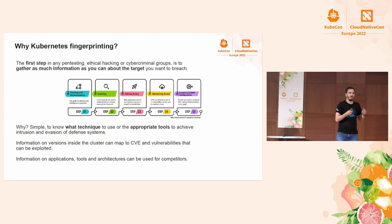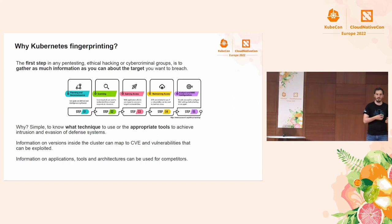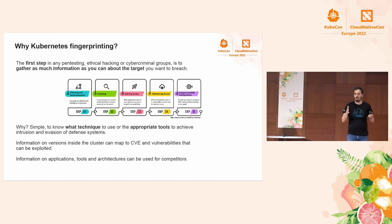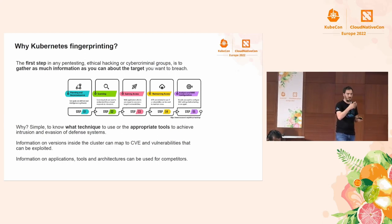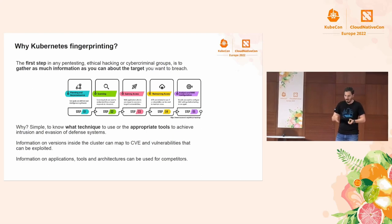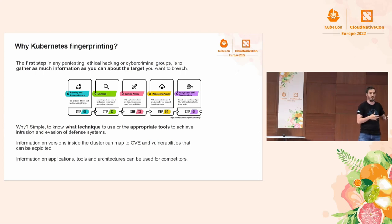Why is it important? Why would someone want to do Kubernetes fingerprinting? If you are pen testing, ethical hacking, or working in security, the first thing to do when you have a target is to gather as much information as you can. You need this information to choose the best tool and technique to get access. It's the first step to initial access, and it's possible to use Prometheus metrics to gather this information and create a plan to attack a Kubernetes cluster.